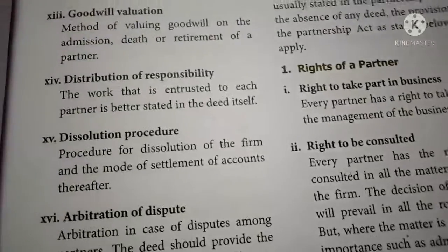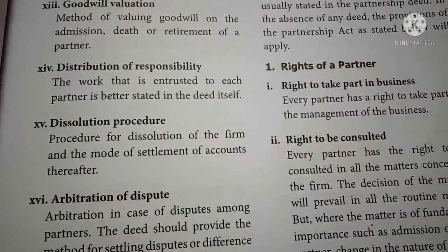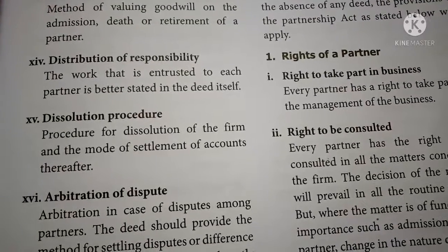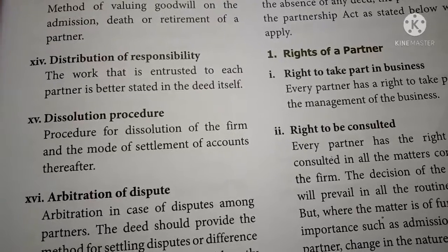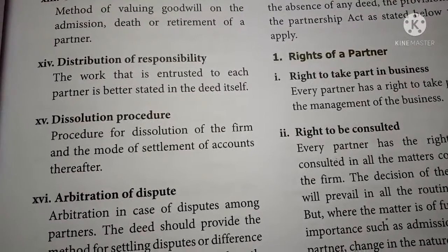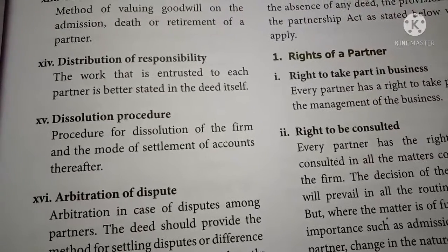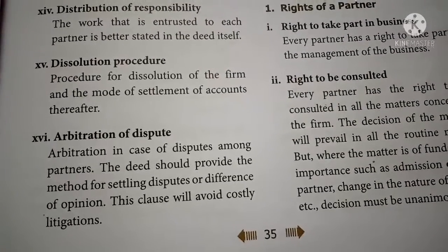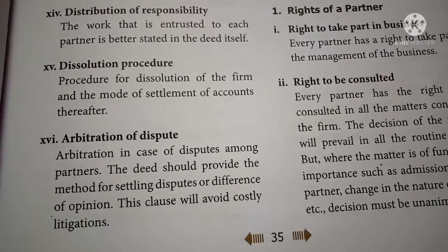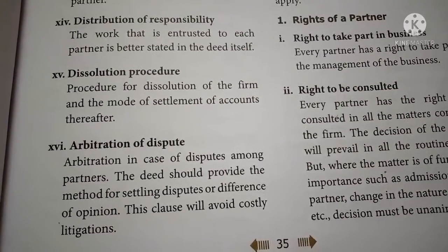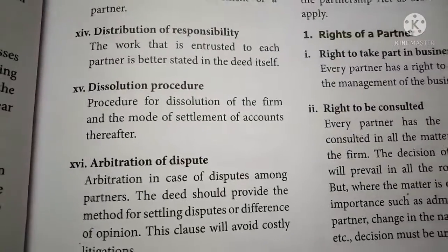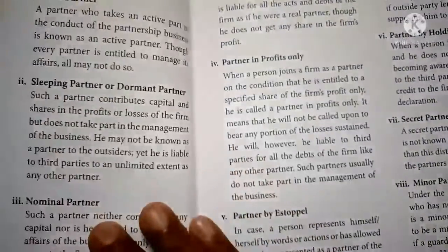Distribution of responsibility: the duties and work assigned to each partner are clearly stated in the deed. Dissolution procedure: the procedure for dissolution of the firm and the mode of settlement of accounts among partners will be mentioned in the partnership deed. Arbitration of disputes: in case of disputes among partners, the deed should provide the method for settling disputes or differences of opinion, which will avoid costly litigation.